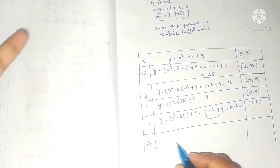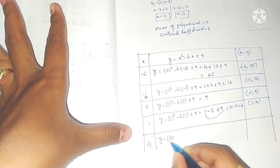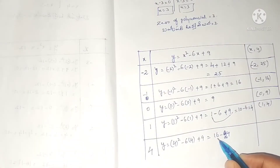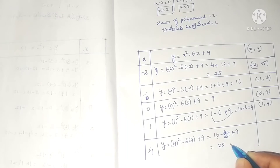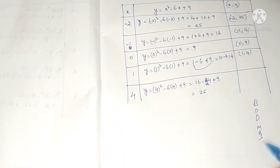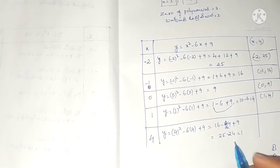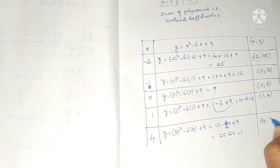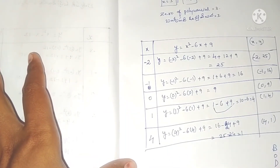Now take x = 4 to get a point near the zero at 3. y = 4² - 6(4) + 9 = 16 - 24 + 9. According to BODMAS rule, do addition first: 16 + 9 = 25, then 25 - 24 = 1. So the point is (4, 1). Many students make a mistake here — this simplification looks tough but the calculation is very easy.